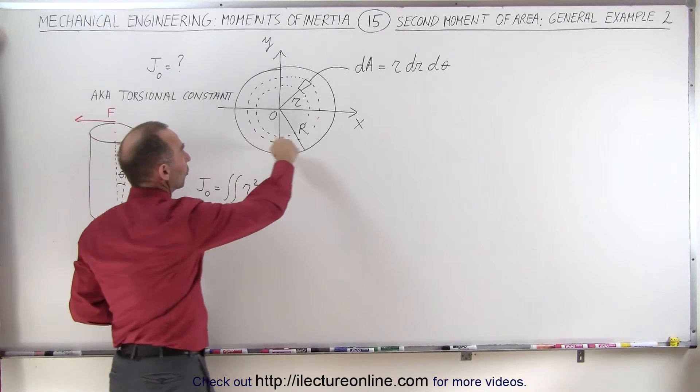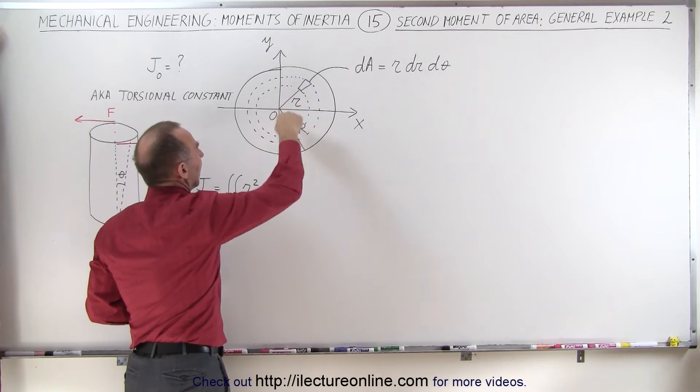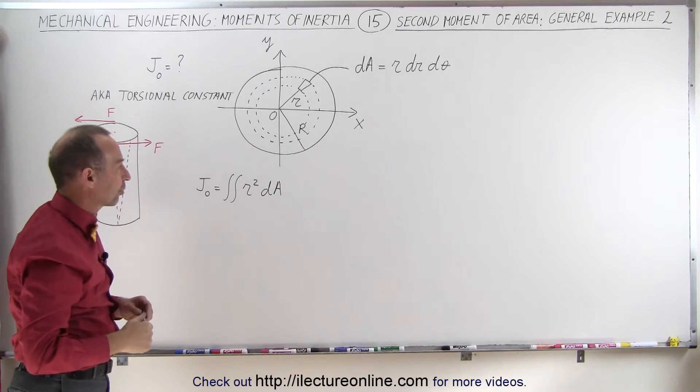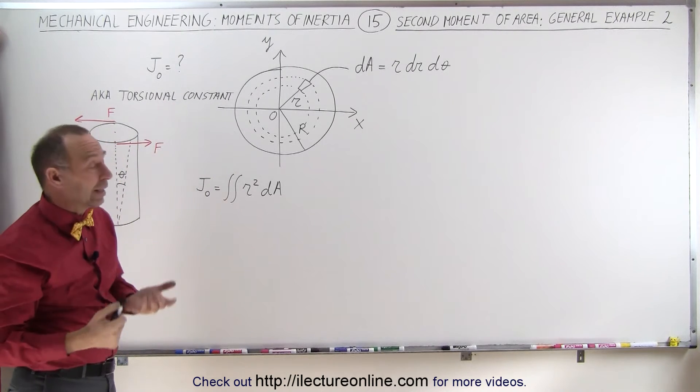So we're going to first integrate around the circle, around theta, and then we're going to integrate from zero to the radius, the full radius of the circle. So let's go ahead and do that and see what we get.